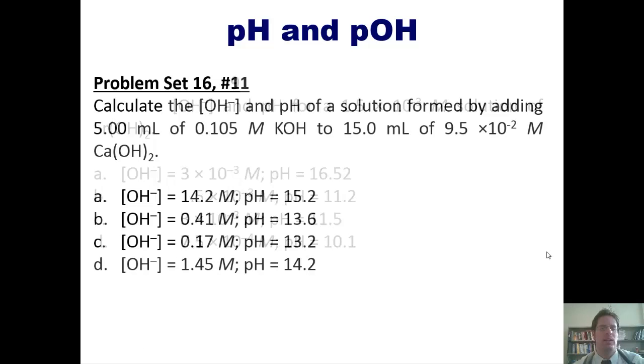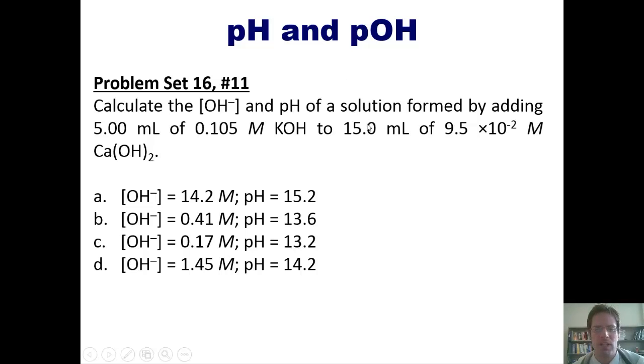And now another. Calculate the hydroxide ion concentration and pH of a solution formed by adding 5 milliliters of this concentration of KOH to 15 milliliters of this concentration of calcium hydroxide. Once again, I invite you to try this on your own. Then if you want, you can click this link, which will take you to a separate video where I answer it for you on the board.